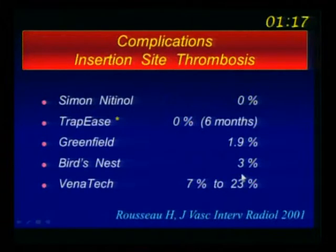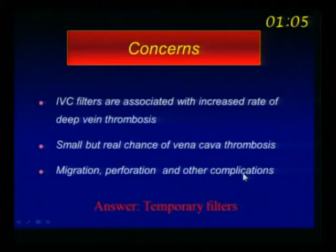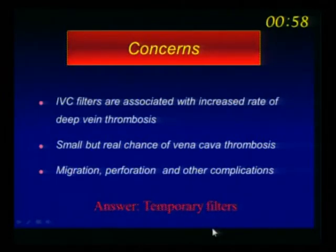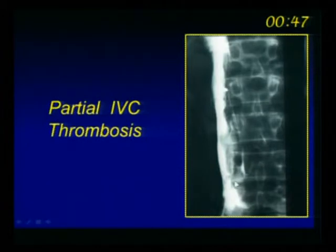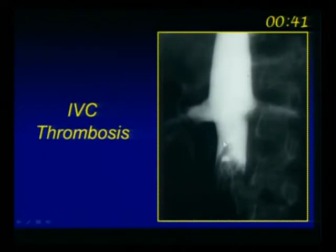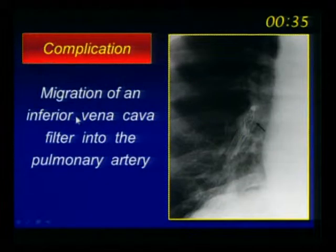The complications are all listed here — I don't have much time to go through them all. You have complications at the insertion site, DVT, and the worst: filter migration up to the heart. Here are some examples: partial thrombosis of the vena cava, complete thrombosis of the vena cava from the filter, filter migration to the suprarenal position, and filter migration to the heart.